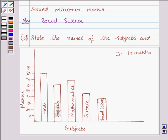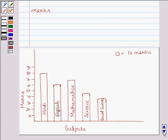Let us now move on to the next part. It says, state the names of the subjects and the marks obtained in each of them. Now look at the bar for Hindi. In Hindi he has scored 80 marks. Now look at the bar for English subject and in English he has scored 60 marks.